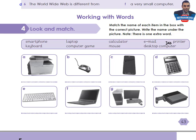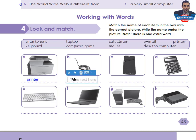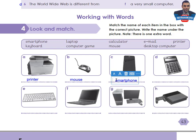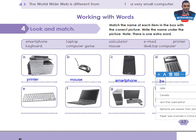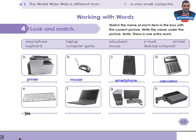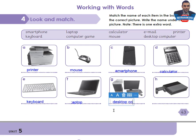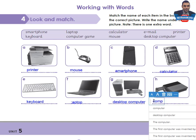Let's check the answers. A: printer. B: mouse. C: computer. F: laptop. G: desktop computer. H: computer game.